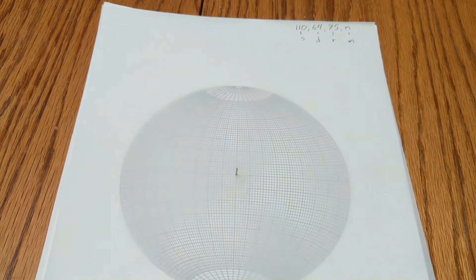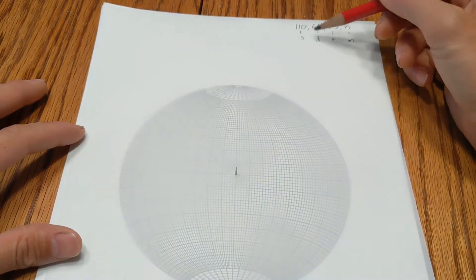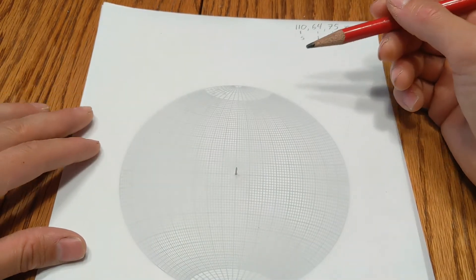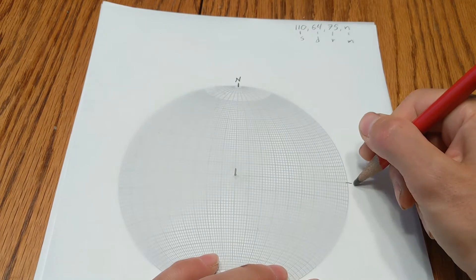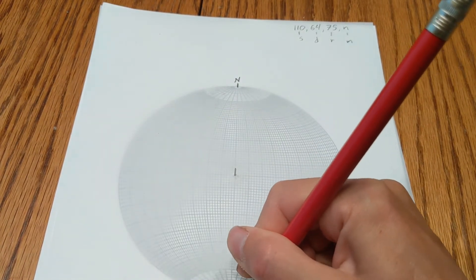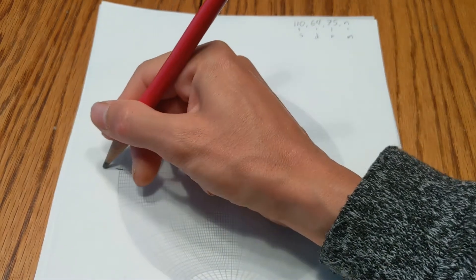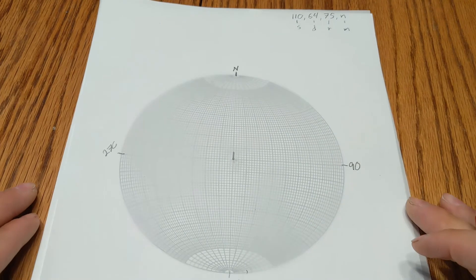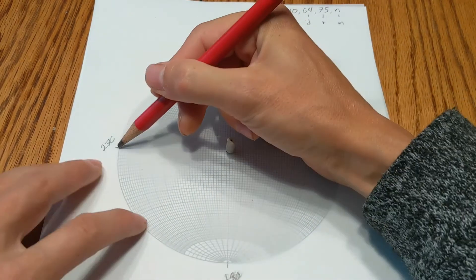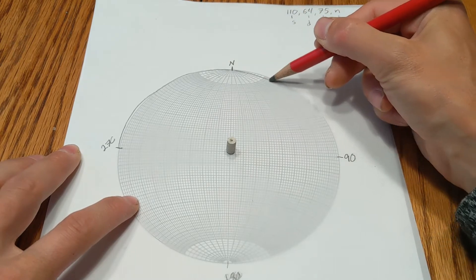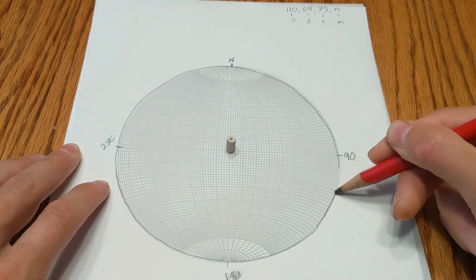So the first thing I need to do is I need to plot the actual fault plane. So I'm going to use the strike and dip to plot that line, that fault plane. Before I do that, I'm going to mark down where north is, and then the azimuth directions. And then you can also trace the outline of the circle as well.